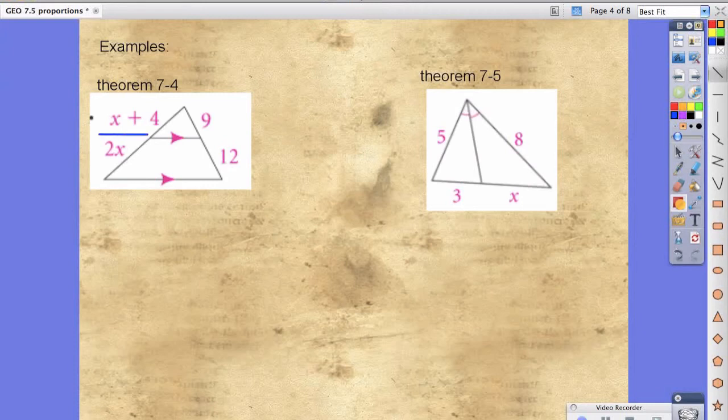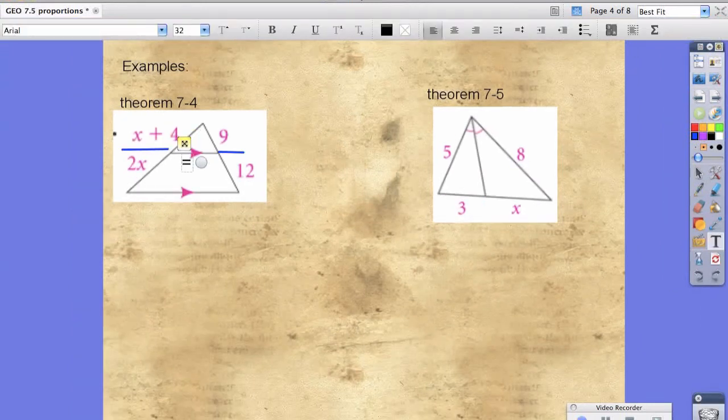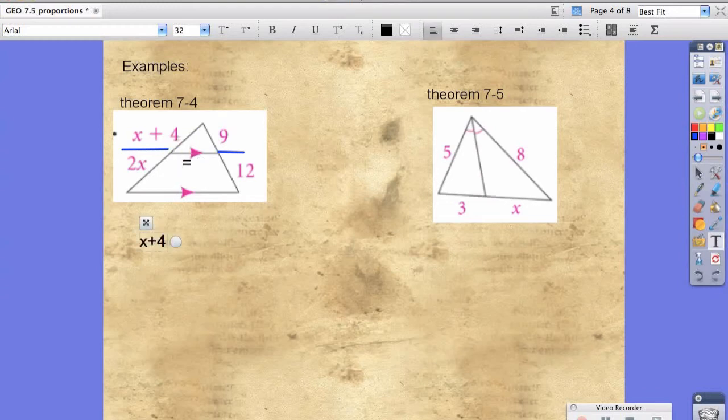we do the two fraction bars and equal sign in between, and that's it. So the way we do that is x plus 4 divided by 2x is equal to 9 divided by 12.